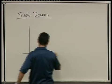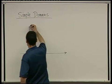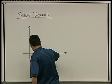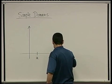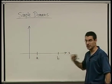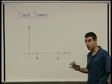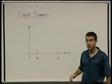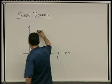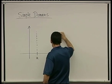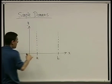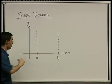A domain is simple if it's of the following form. The x's have to be strictly between two given constant values, a and b. Now for a rectangle, the y's would also be between constants c and d. But here, for a simple domain, the y's are allowed to live between two functions of x.